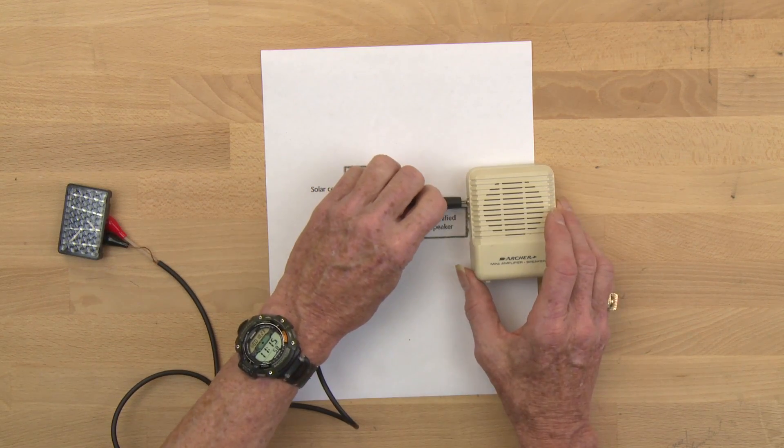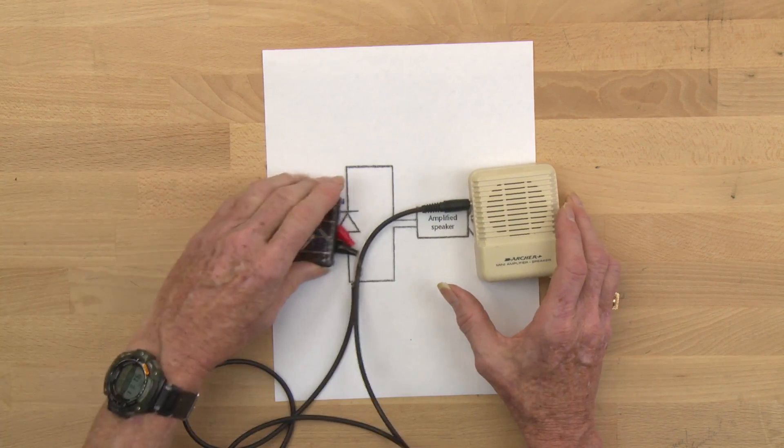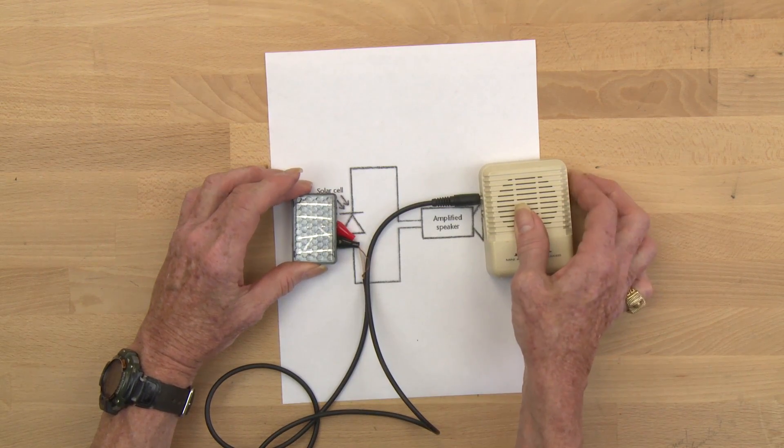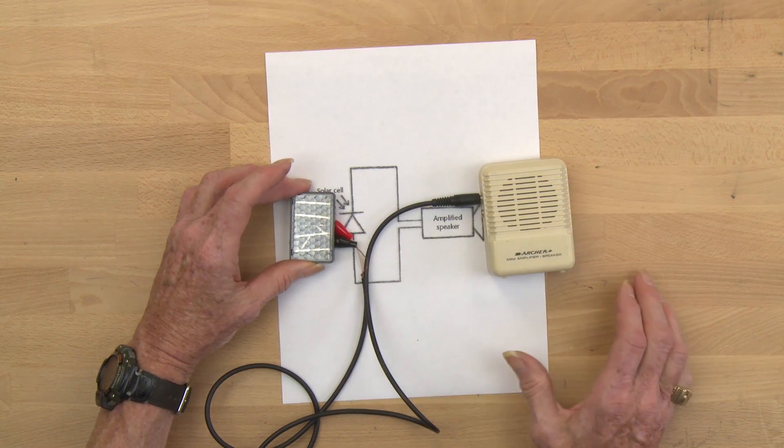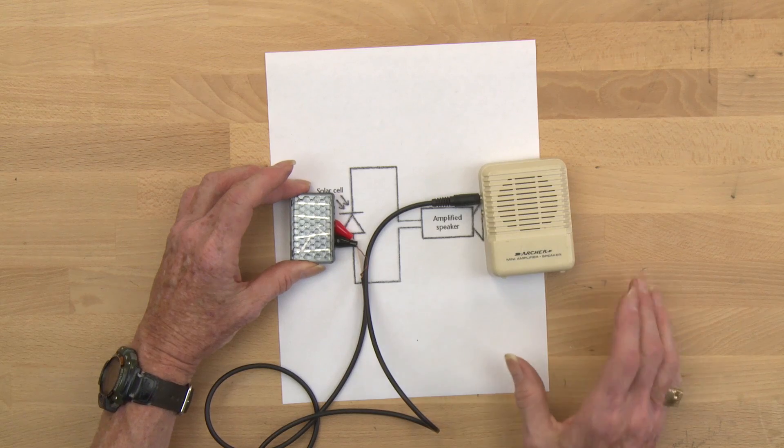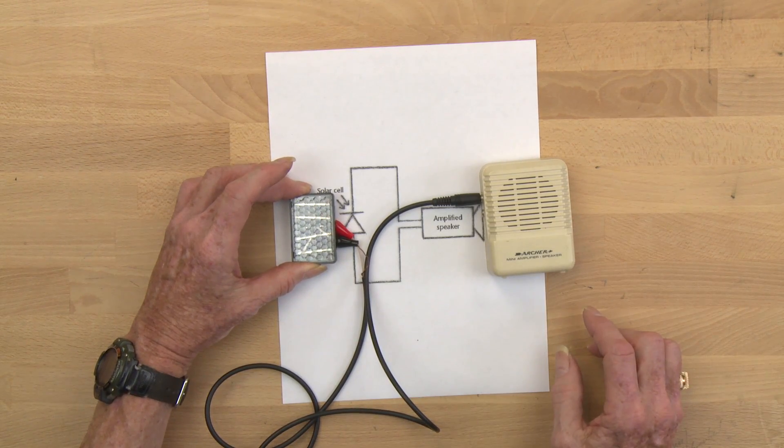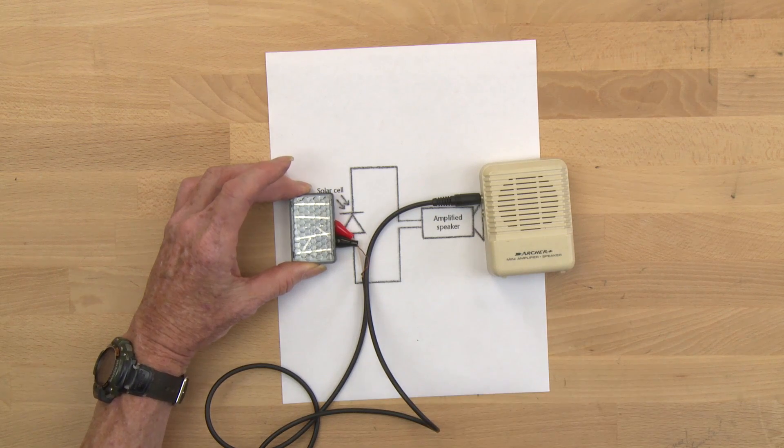When I plug the solar cell into the amplified speaker and turn it on, I can hear the buzzing of the room lights. Room lights actually get brighter and dimmer with time, and they make a little buzzing signal. That's a good way to test that your circuit is working.